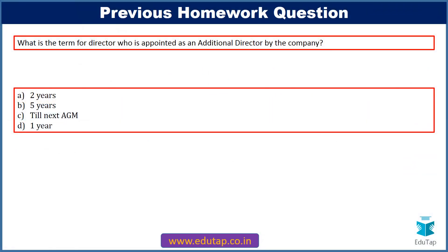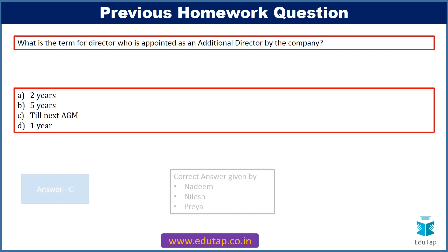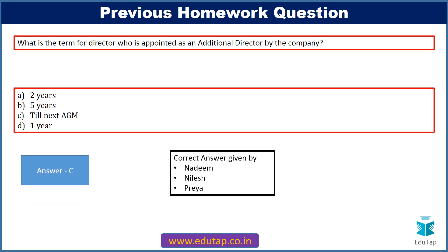Last week I gave you a homework from Chapter number 11. The question was: what is the term for a director who is appointed as an additional director by the company? Options were 2 years, 5 years, till the next AGM, or 1 year. The correct answer was given by Nadeem, Nilesh and Priya — option C, till the next Annual General Meeting. An additional director is appointed by the company till the conclusion of the next annual general meeting.